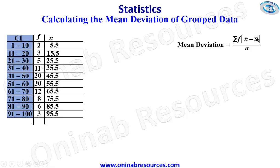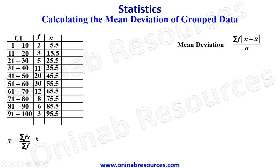We then go ahead to find x-bar, the mean of the distribution. The formula is x-bar equals sigma fx over sigma f, which leads us to create an additional column for fx. The fx column represents frequency multiplied by the mid value.